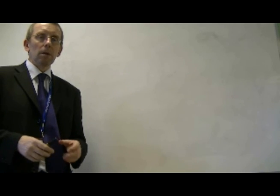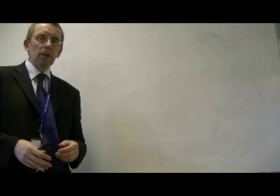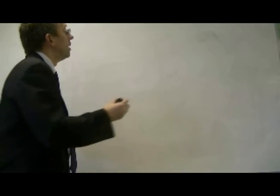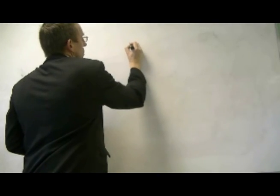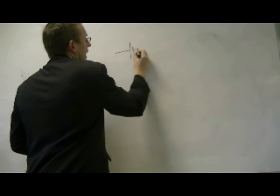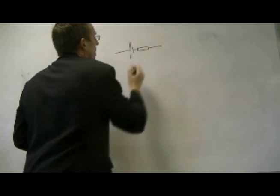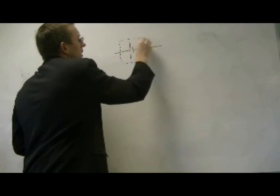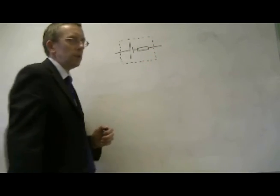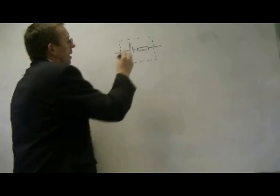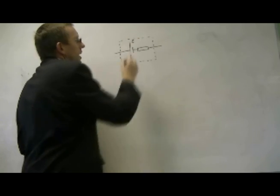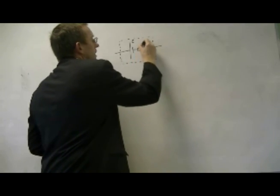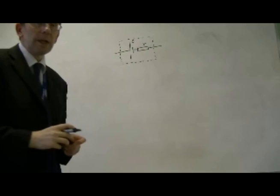So we can say that the terminal potential difference is equal to the EMF minus the potential difference across the internal resistance. And this potential difference is equal to the current flowing through the battery times the value of this resistor. Here is my source of EMF and the internal resistance, and in my model those two components are inside the battery or the cell. I use a little curly E called epsilon to represent the EMF and a little r to represent the value of the resistance.